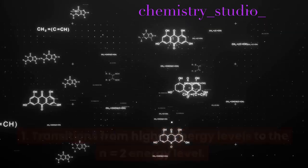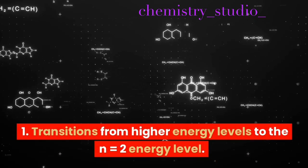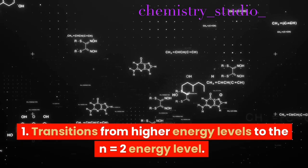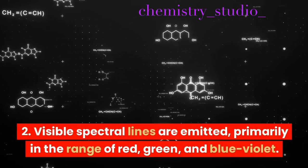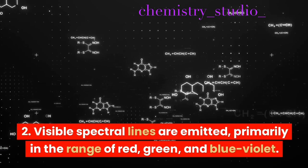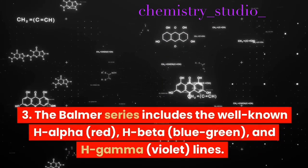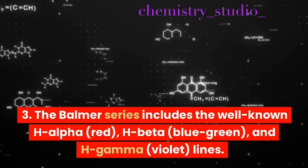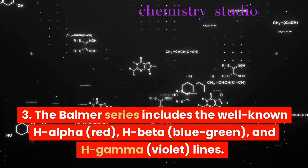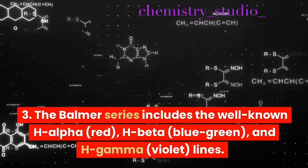Balmer series: transitions from higher energy levels to the N=2 energy level. Visible spectral lines are emitted, primarily in the range of red, green, and blue-violet. The Balmer series includes the well-known H-alpha (red), H-beta (blue-green), and H-gamma (violet) lines.